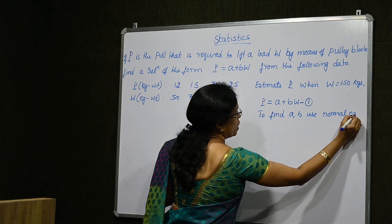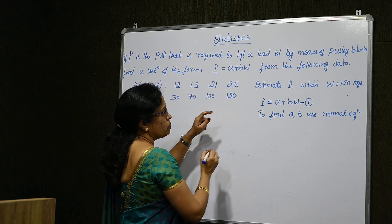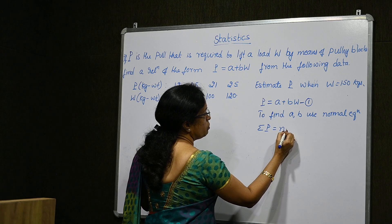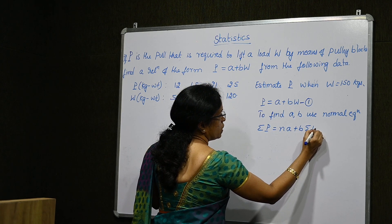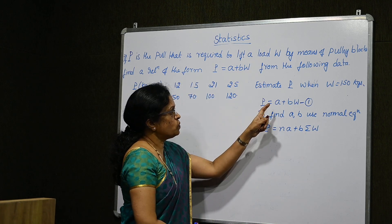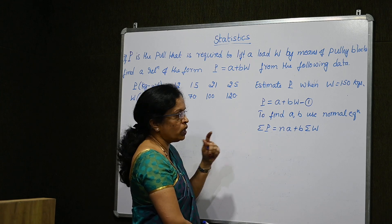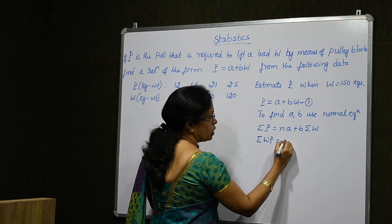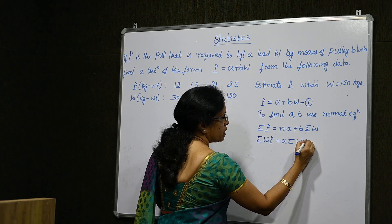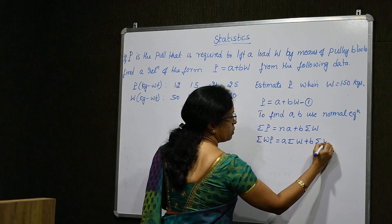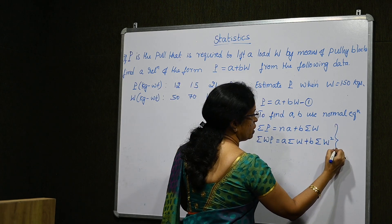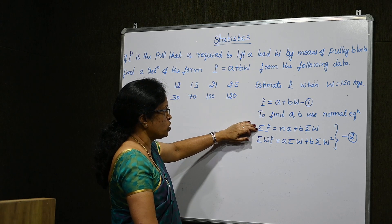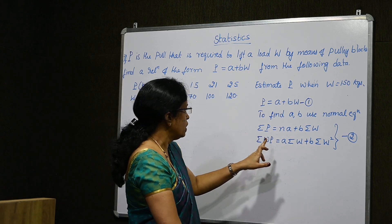The normal equations are: sigma P equals N times A plus B times sigma W — this is the first equation. The second equation is obtained by multiplying throughout by W: sigma(WP) equals A times sigma W plus B times sigma(W squared). Together these are the normal equations. We need the values of sigma P, sigma W, sigma(W squared), and sigma(WP).